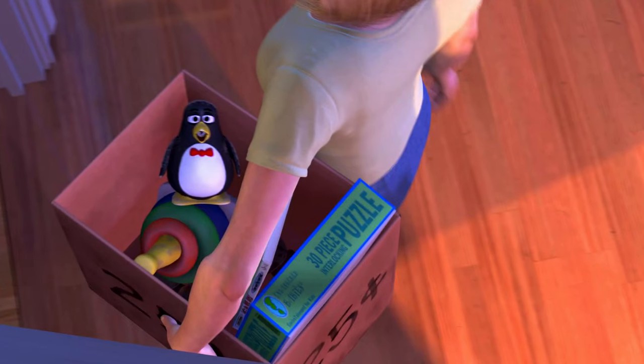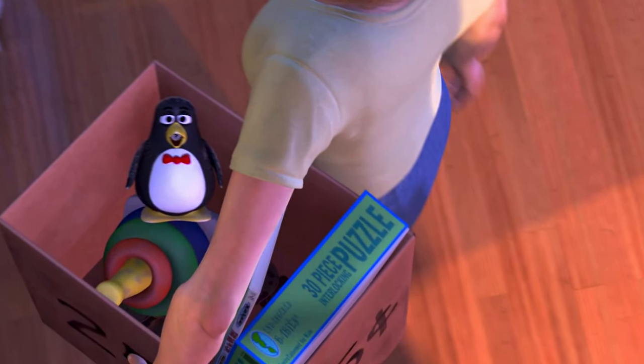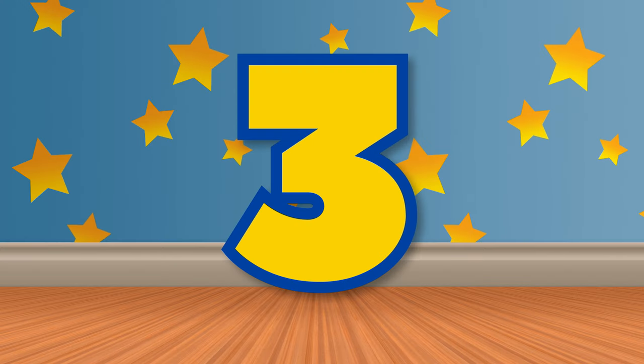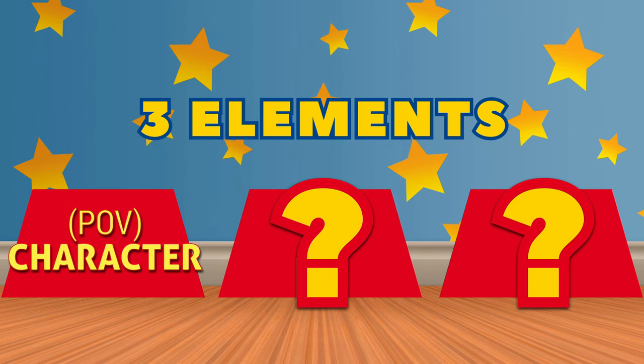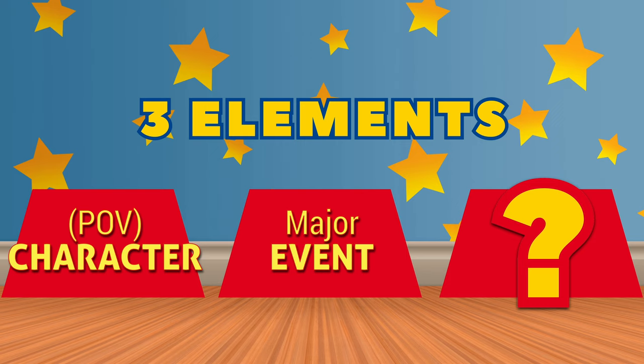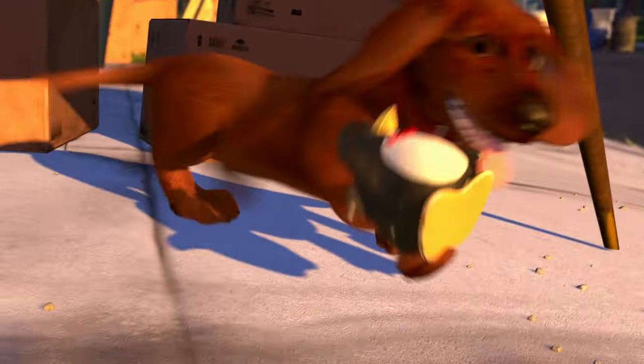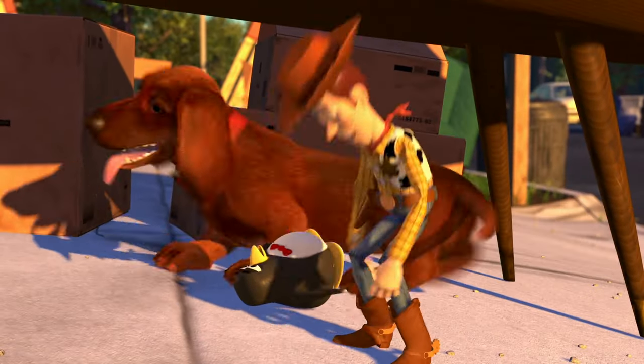Then what is the trigger that we're after? It is mum entering the room and taking Wheezy away. This I call the major event, and you may call it the inciting incident if you wish. Now what is the final element? If the first element is the character through whose eyes we experience the story — here, Woody — and the second element is the major event that affects him — mum taking Wheezy away — then what does this major event lead to? An action. Woody's action of saving Wheezy. Now there is a much better chapter title: saving Wheezy.